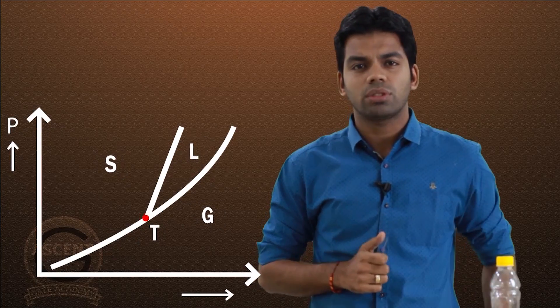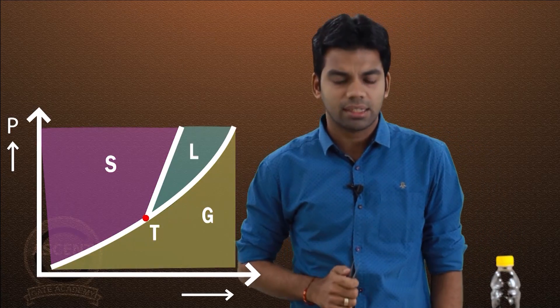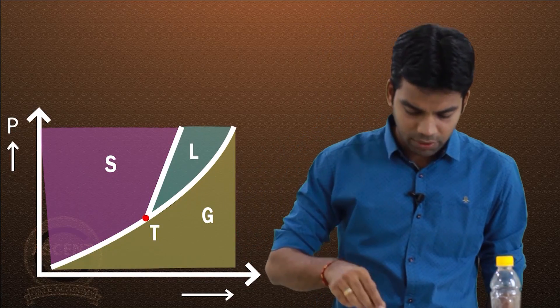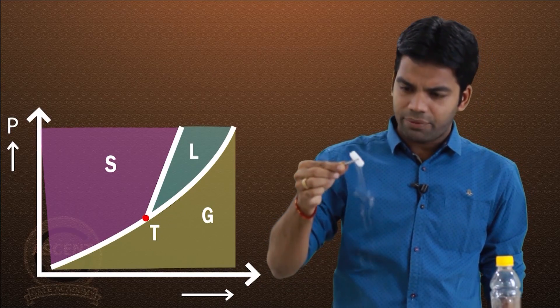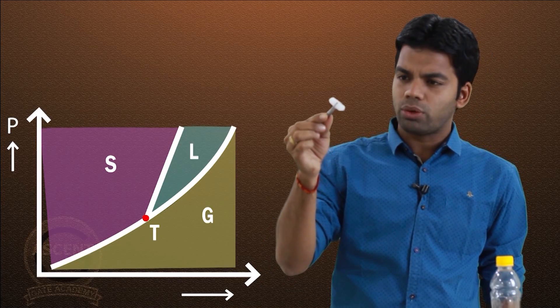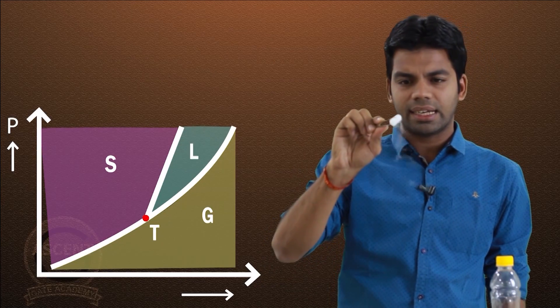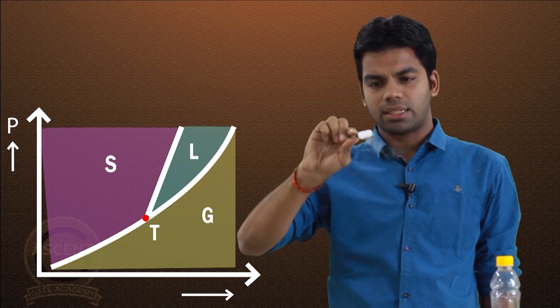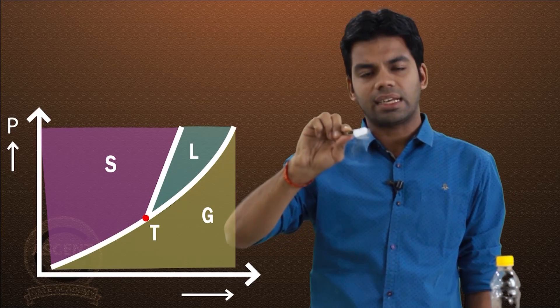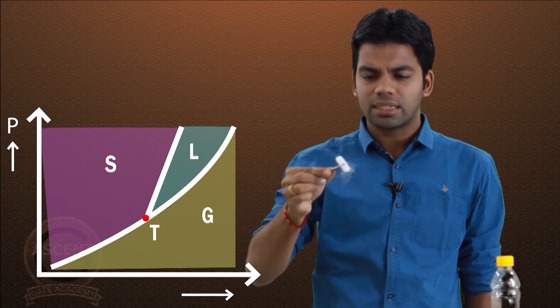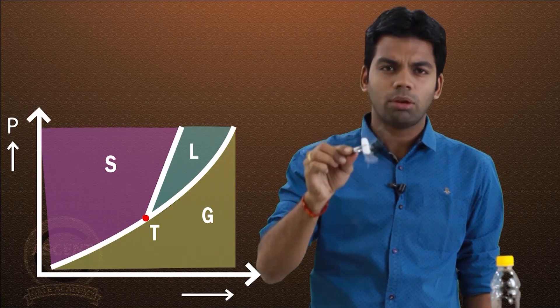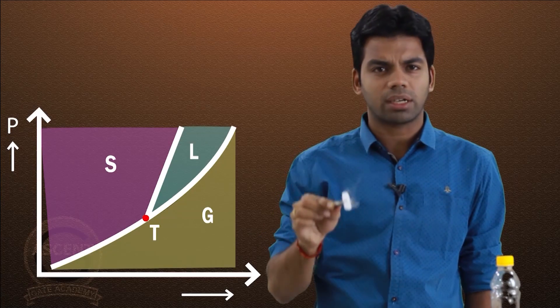Now, how does dry ice function and why is it used as a fire extinguisher? When the dry ice is exposed to the atmosphere, you can see it is directly getting vaporized — directly getting sublimated. This happens because of the triple point.